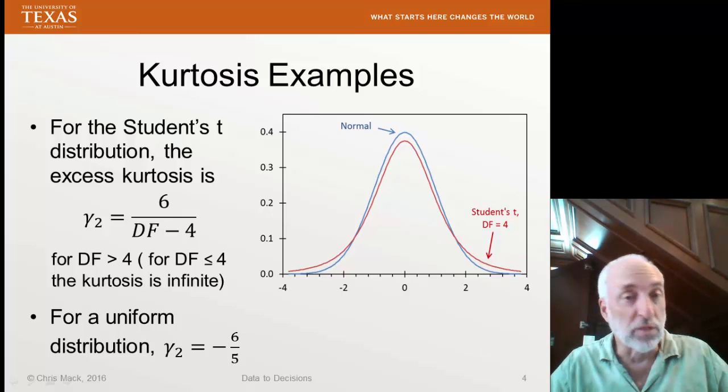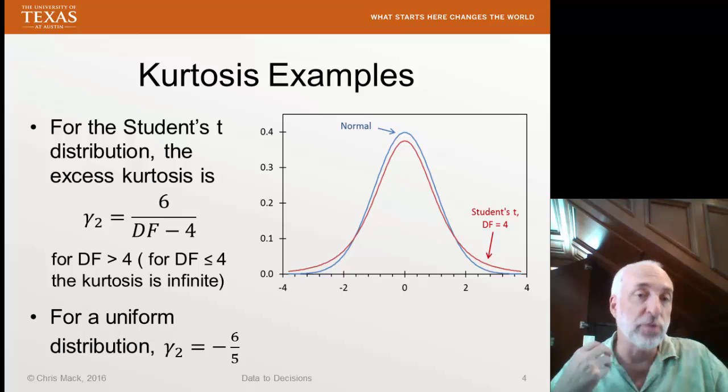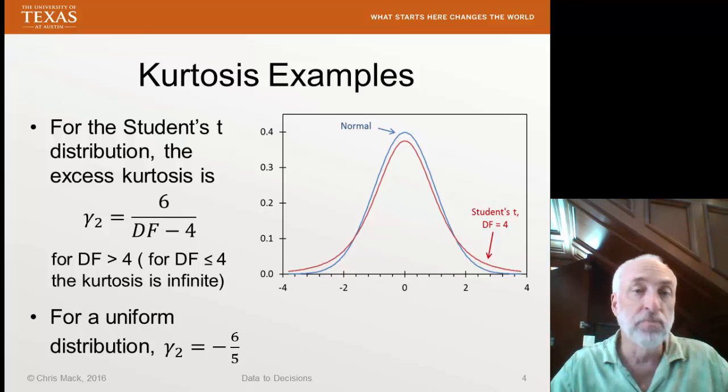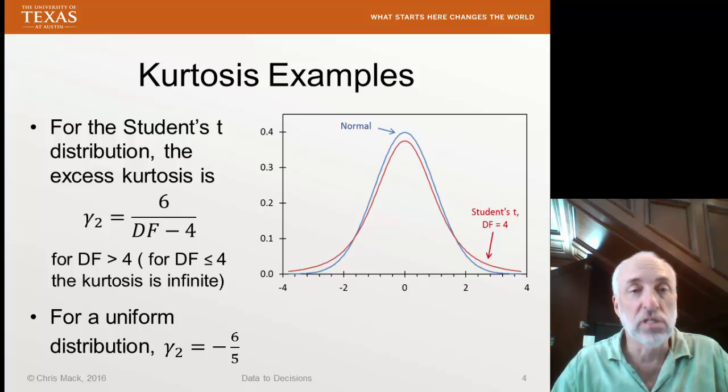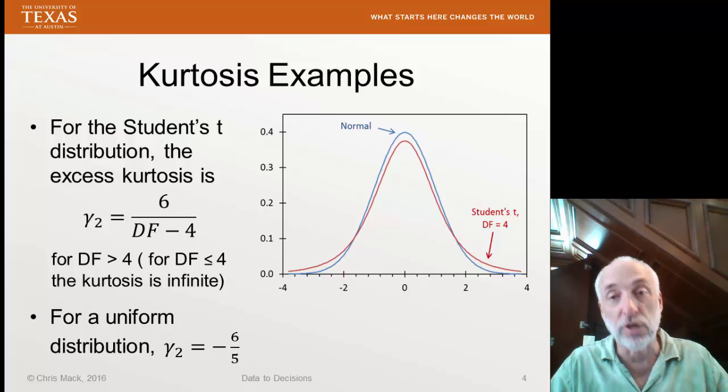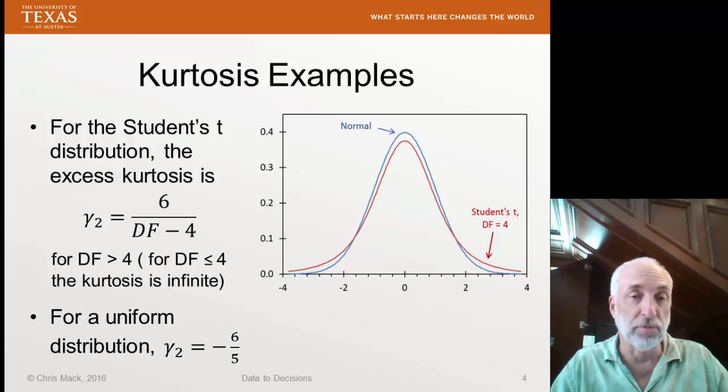So the degrees of freedom is one of the parameters of the student's t distribution. As the degrees of freedom gets larger and larger, gamma 2 goes to 0. In other words, as you probably know, as the degrees of freedom gets large, the student's t distribution approaches the normal distribution.